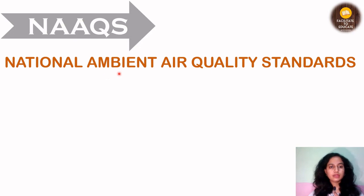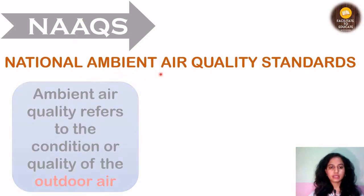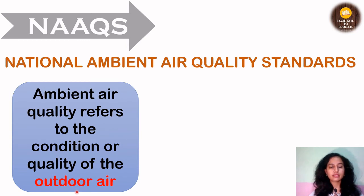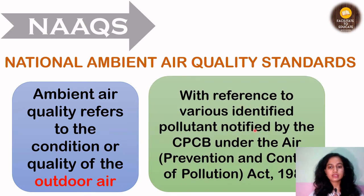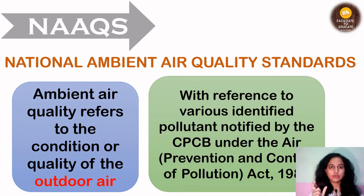Now we need to know what it means by ambient air quality. The ambient air quality refers to the condition or quality of the outdoor air. Here we are taking into consideration particularly the outdoor air and setting standards for it. This is with reference to various identified pollutants notified by the CPCB, that is the Central Pollution Control Board, under the Air Act 1981. We only talk about those 12 air pollutants.